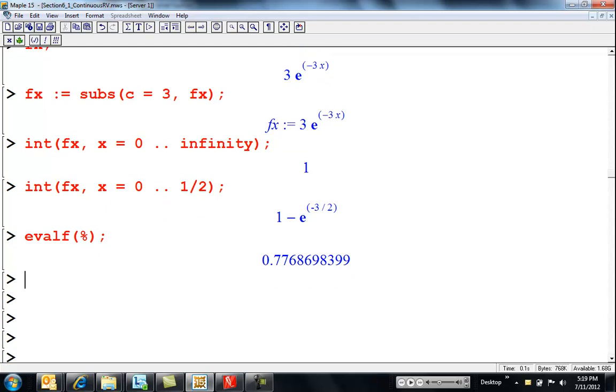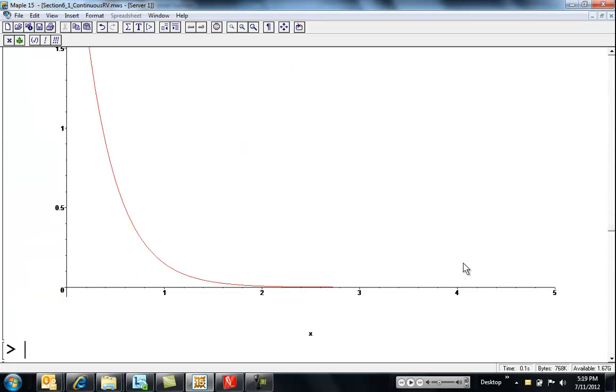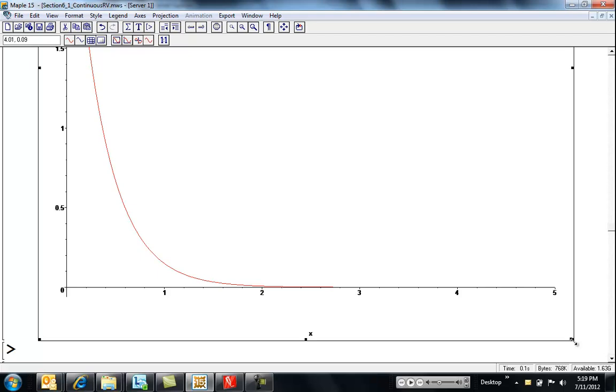Okay, maybe we should have looked at a graph of this. Let's plot f of x from x equals zero to, I don't know, let's just go to five for now. You know what an exponential looks like, so it's not surprising, this graph we get.